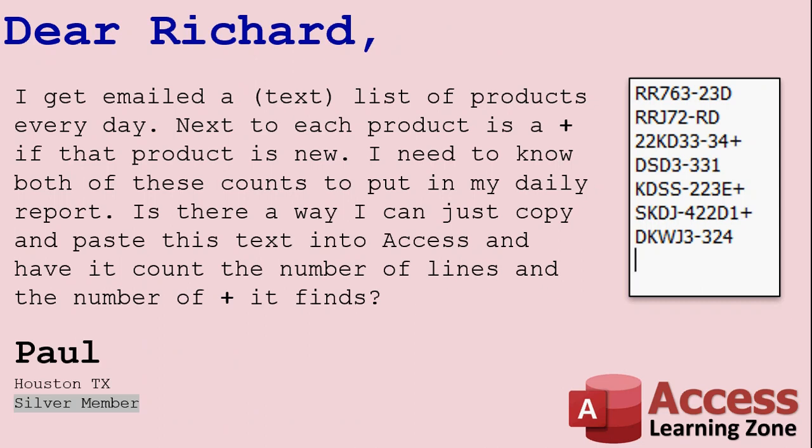Paul asks: I get emailed a text list of products every day. Next to each product is a plus sign if that product is new. I need to know both of these counts to put in my daily report. Is there a way I can just copy and paste this text into Access and have it count the number of lines and the number of plus signs it finds? He doesn't really do anything with that data except he needs a count of the total number of products and how many of them are new.